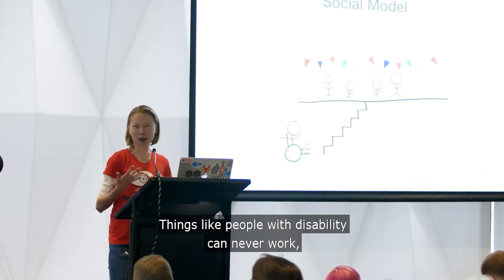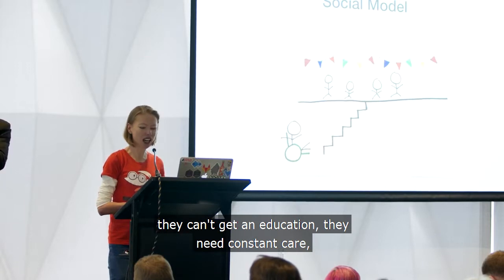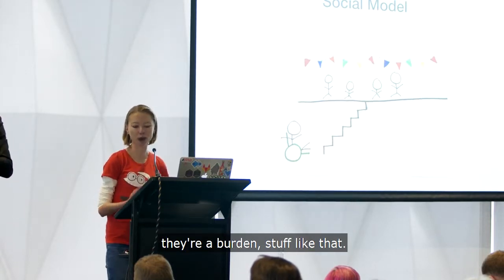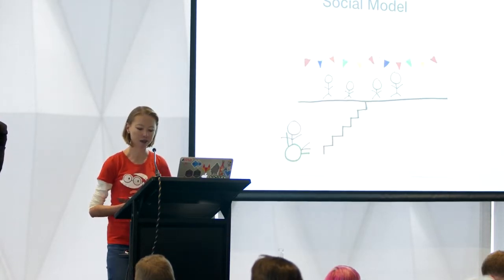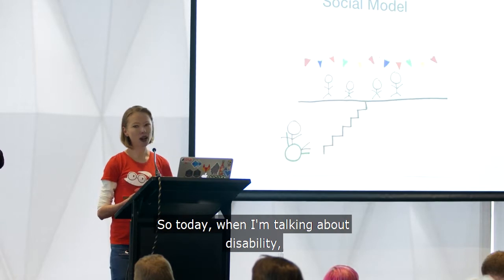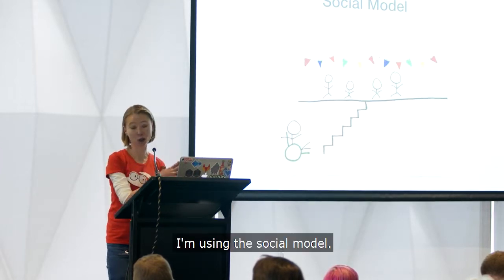Things like people with disability can never work, they can't get an education, they need constant care, they're a burden — stuff like that. So today, when I'm talking about disability, I'm using the social model.